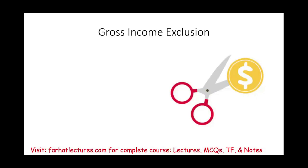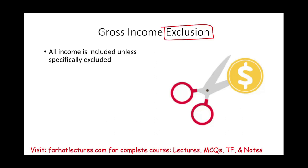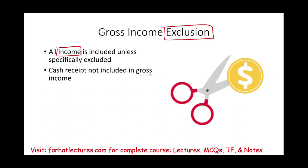Hello and welcome to this session on gross income exclusion. In the absence of any specific information, all income is included — meaning taxable — unless specifically excluded. Excluded means it's not taxable. There are certain items that are not taxable, and we need to discuss the rules for those. Gross income exclusion is when you receive cash and that cash is not included in gross income, therefore not taxable.